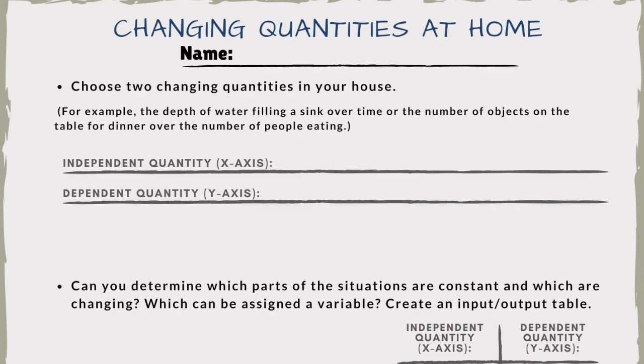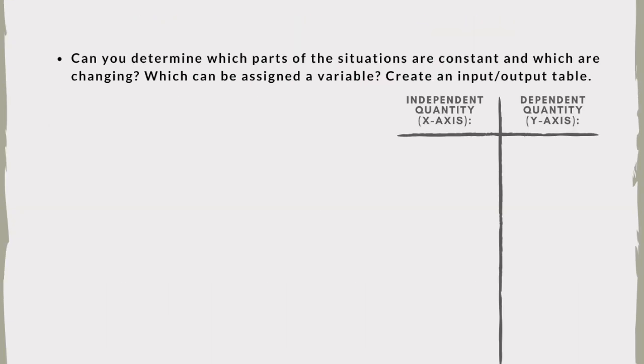Today we're looking at changing quantities at home. Choose two changing quantities in your house. For example, the depth of water filling in a sink over time or the number of objects on a table. Can you determine which parts of the situation are constant and which parts are changing?